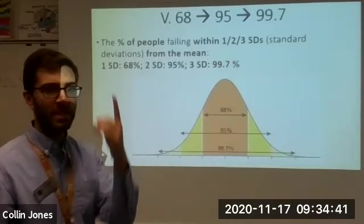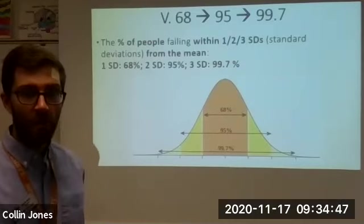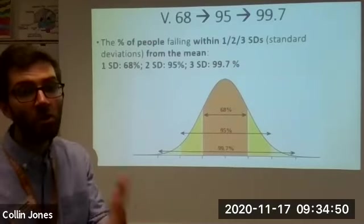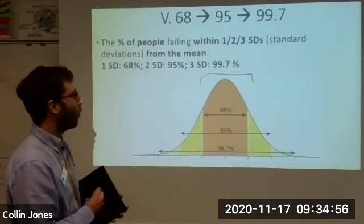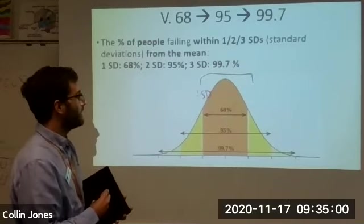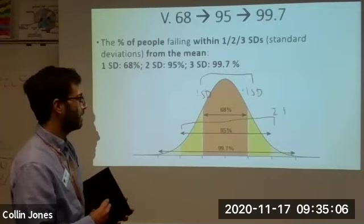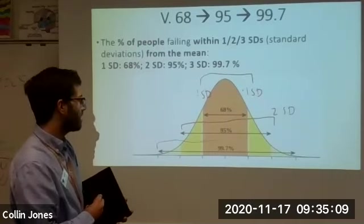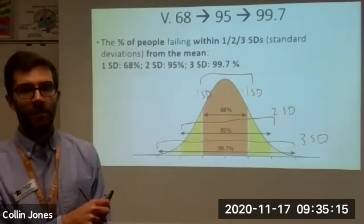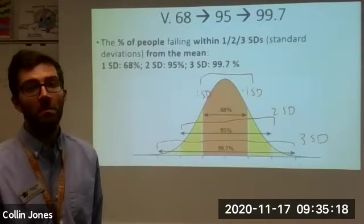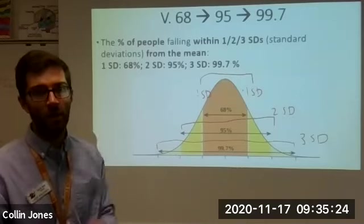So, again, in any normal curve, it could be intelligence, it could be height, it could be grades, it could be test scores, it could be batting average, free throw percentage. In any normal curve, in any normal curve, which is most data sets, 68% of the subjects, of the people, fall within one standard deviation of the mean. 95% of folks are within two standard deviations of the mean. And 99.7% of people are within three standard deviations of the mean. It's just how close people are to the average. More people are near the average. And these numbers tell us exactly what percent of people are near the average.